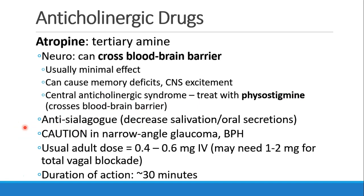Atropine can be used as an antisialogogue — that is, it will decrease salivation and oral secretions. This may be helpful if you need to do endoscopy or awake intubation. Patients who have narrow-angle glaucoma or benign prostatic hypertrophy may have those conditions exacerbated by an anticholinergic drug. The usual adult dose of atropine is around 0.4 to 0.6 mg IV, although you may need to go up to 1 to 2 mg to achieve total vagal blockade. The duration of action is about 30 minutes.